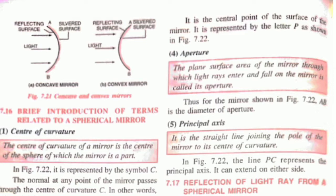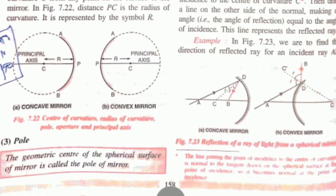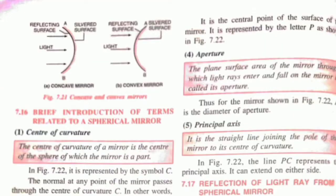Here are a few terms to understand. First is the center of curvature. Second is the radius of curvature. Third is the pole — the geometric center of the spherical surface is called the pole of the mirror. Fourth is aperture — the plane surface area of the mirror through which light rays enter. Fifth is the principal axis — the straight line that joins the pole of the mirror to its center of curvature.